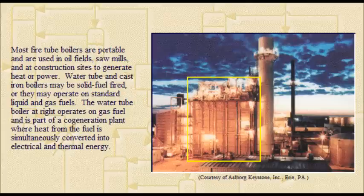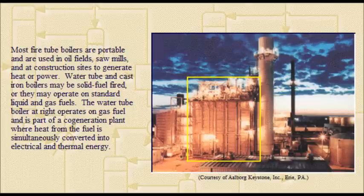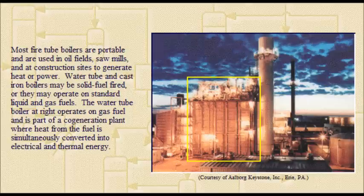Most fire tube boilers are portable and are used in oil fields, sawmills, and at construction sites to generate heat or power. Water tube and cast iron boilers may be solid fuel fired, or they may operate on standard liquid and gas fuels. The water tube boiler shown operates on gas fuel and is part of a co-generation plant, where heat from the fuel is simultaneously converted into electrical and thermal energy.